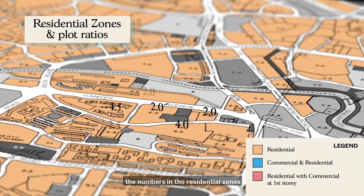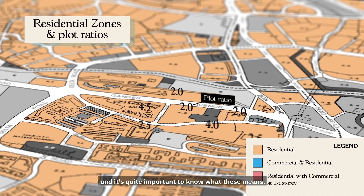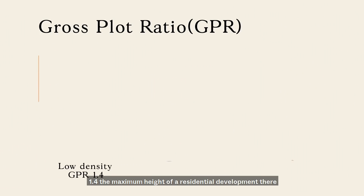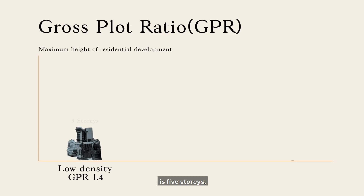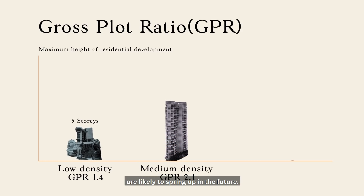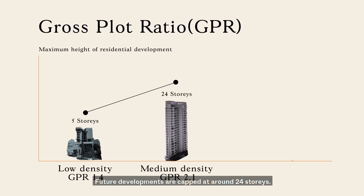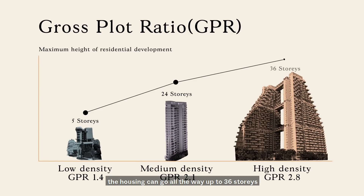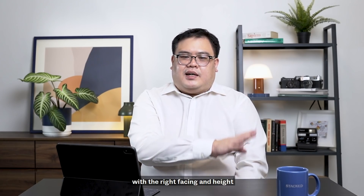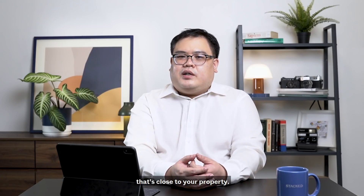The numbers in the residential zones indicate the plot ratio, and it's quite important to know what these mean. A GPR (gross plot ratio) of 1.4 or under generally means low density housing — you tend to see that in landed housing enclaves. At 1.4, the maximum height of a residential development is five stories, so you can be quite sure your view generally won't be blocked. A medium density is 2.1, where many condos are likely to spring up, with future developments capped at around 24 storeys. A GPR of 2.8 or higher is a very high density area where housing can go all the way up to 36 storeys, so be careful about picking a unit with the right facing and height.